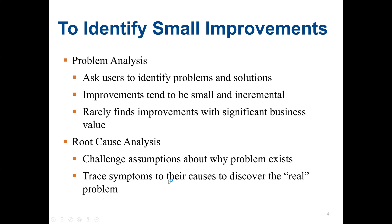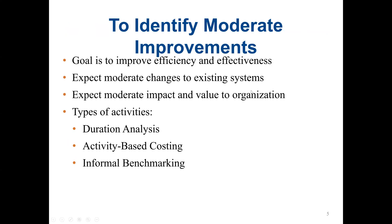We can trace the symptoms to their occurrences and discover the real problem. To identify moderate improvements, the goal is to improve both efficiency and effectiveness, and we should expect moderate changes to the existing system and moderate impact and value to the organization. Types of activities include duration analysis, activity-based costing, and informal benchmarking.